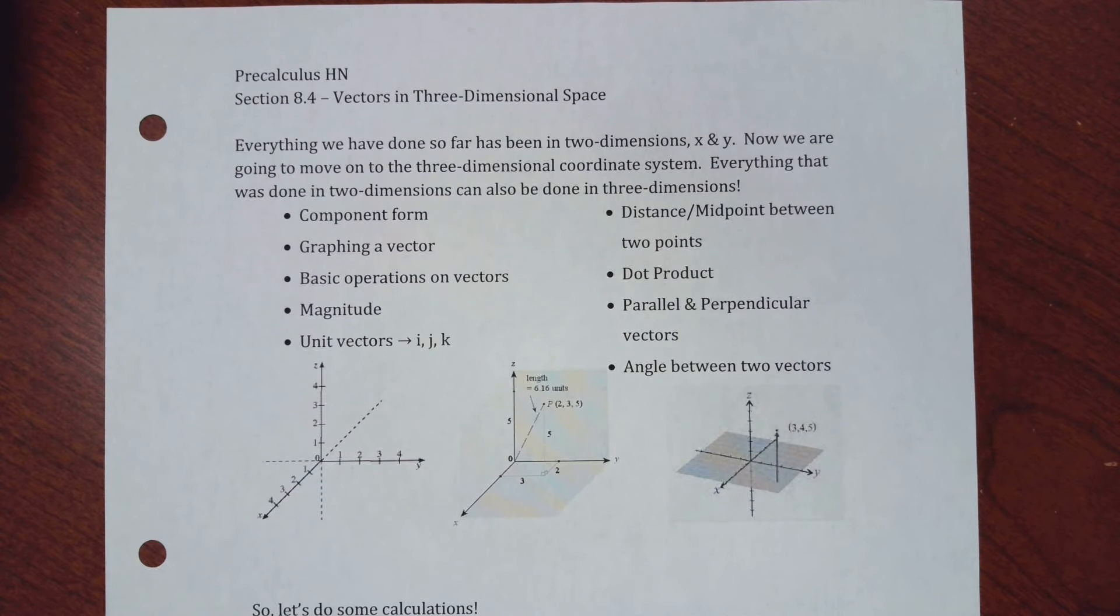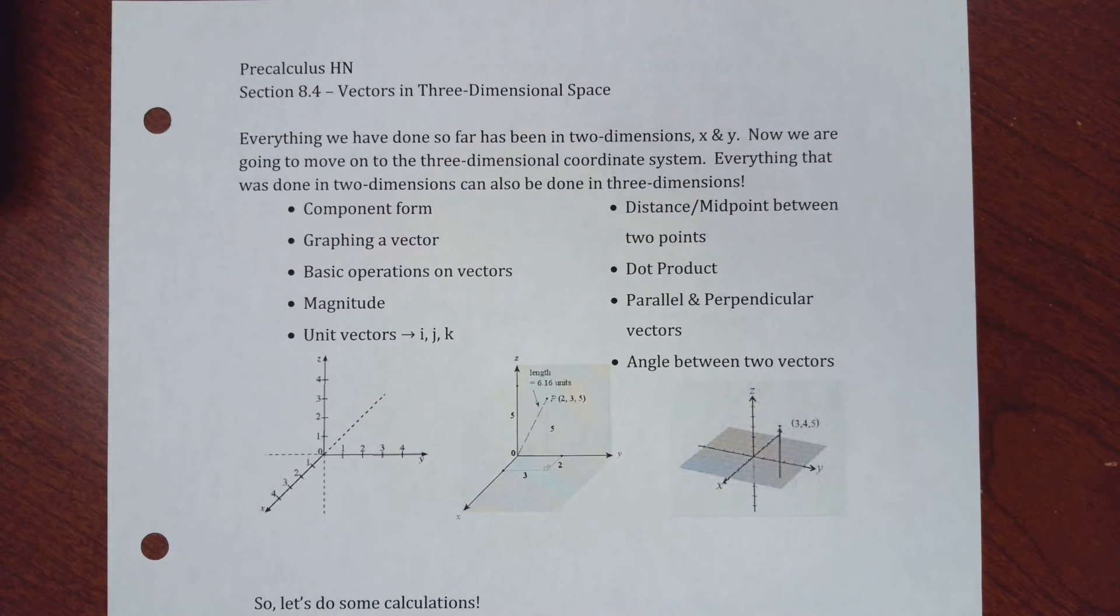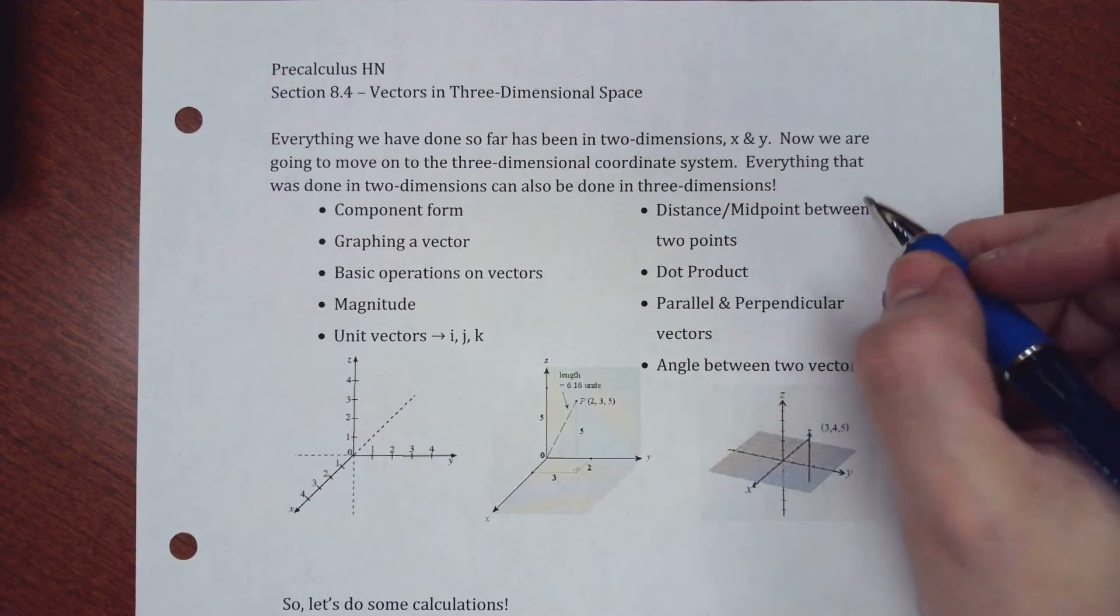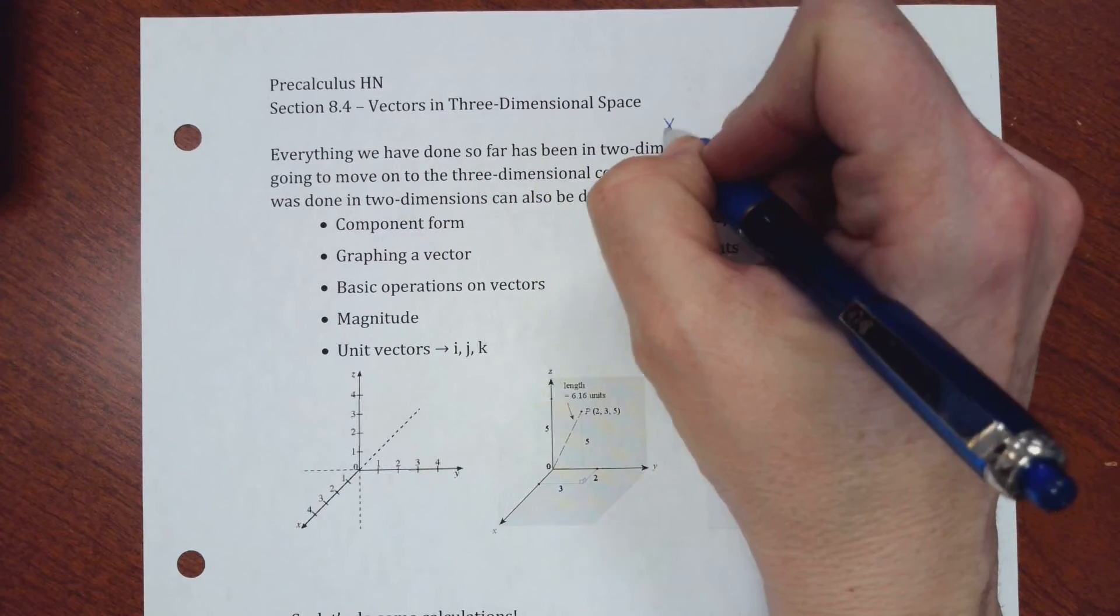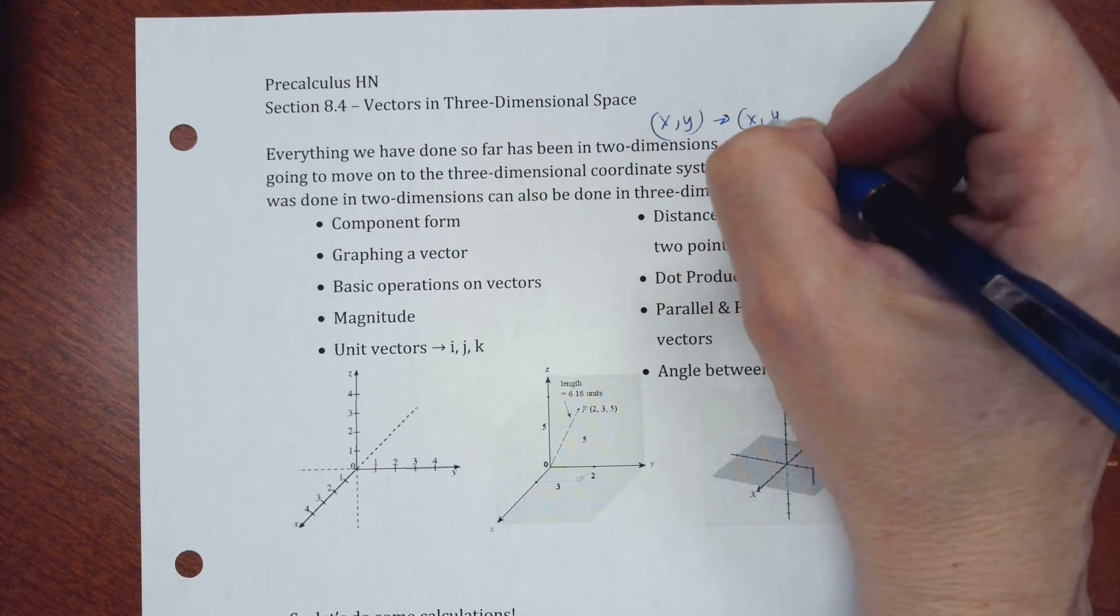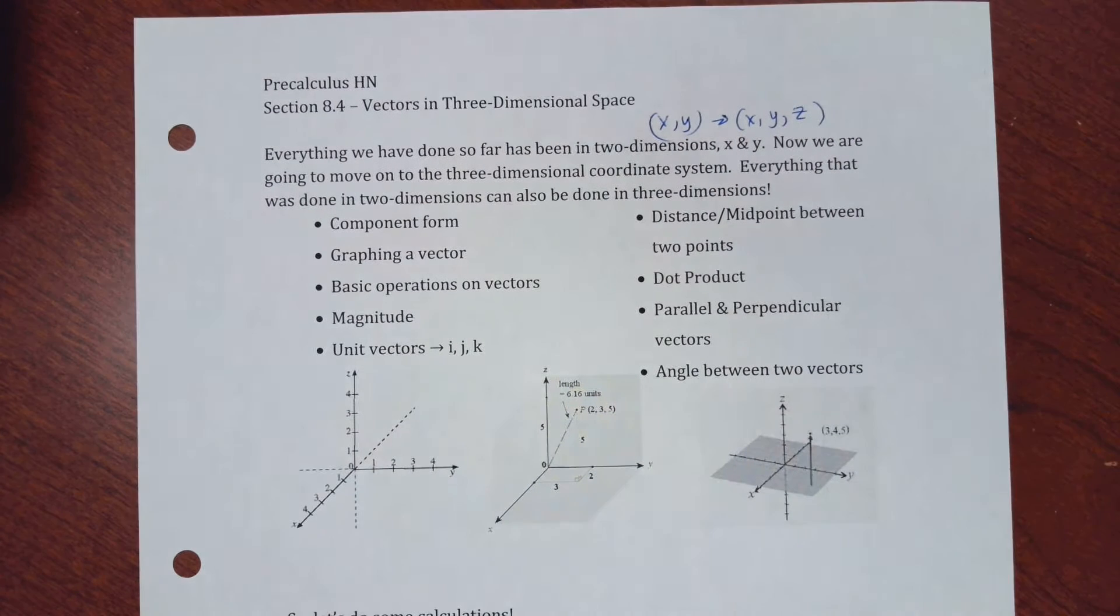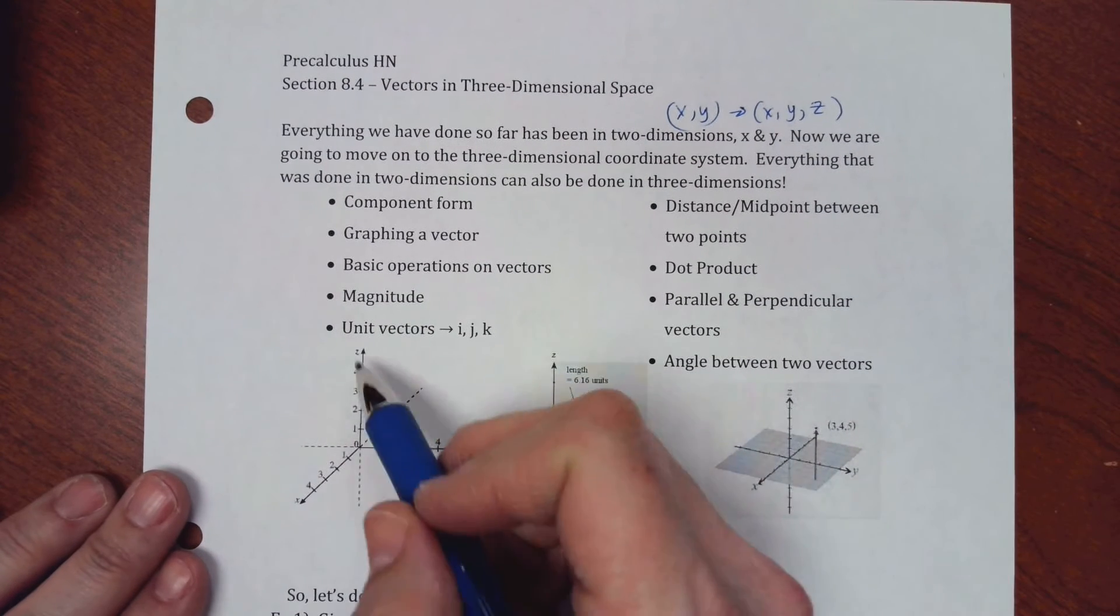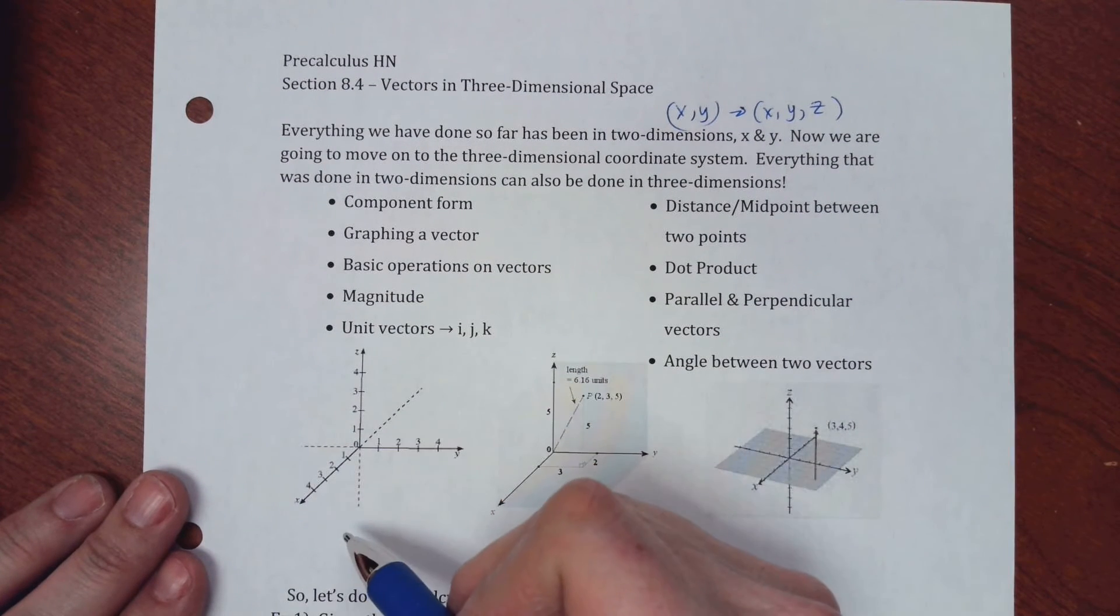Alright, in section 8.4, you're basically going to do everything that we did in two dimensions in three dimensions. Whereas before you had points that were like x and y, you now have points that are x, y, and z. So it is very difficult to draw something in three dimensions on a flat piece of paper. So you have like a set of axes right here.